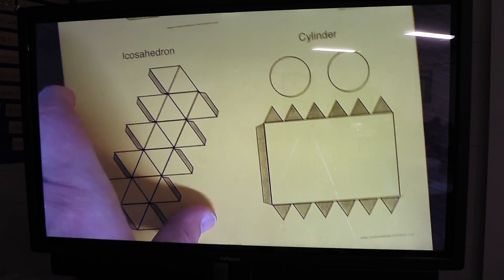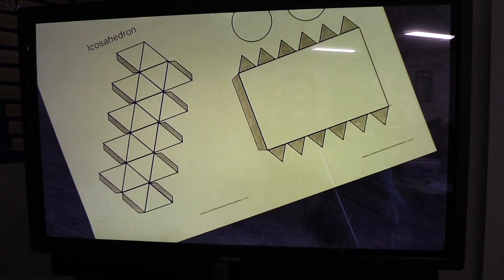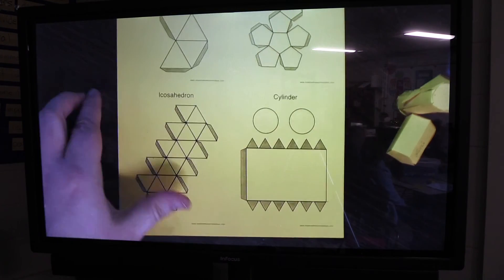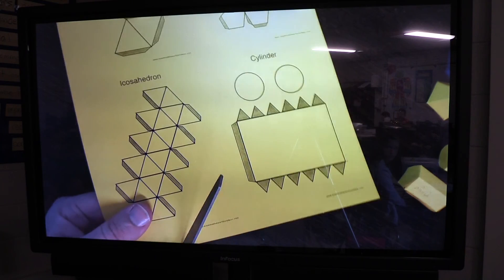So the first thing I'm going to do is I'm going to cut this shape out. Now I'm going to pull up the document camera that we're using so we can get a better view of what exactly it is I'm doing.